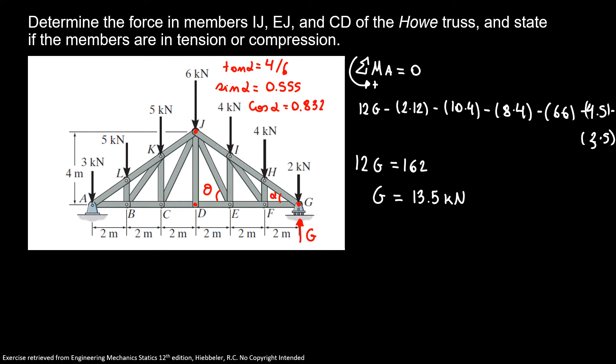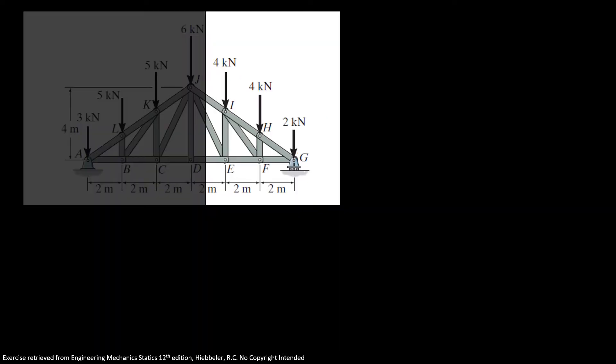For our theta, tangent of theta equals 4 over 2. And here sine of theta, we have 0.894, and cosine of theta equals 0.447. Now we can move on with our question.